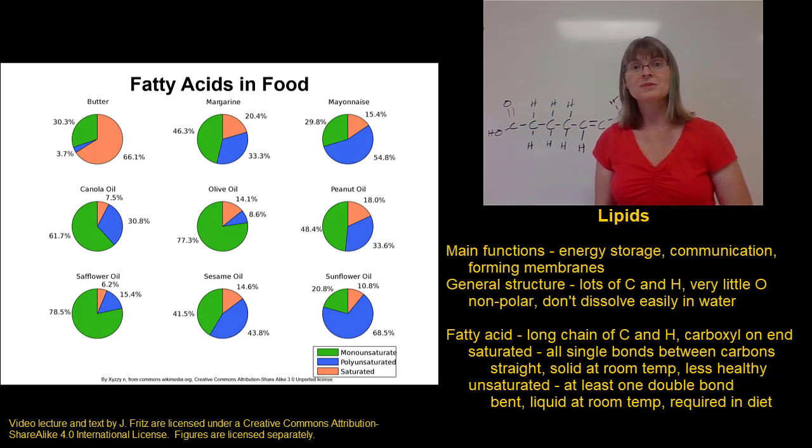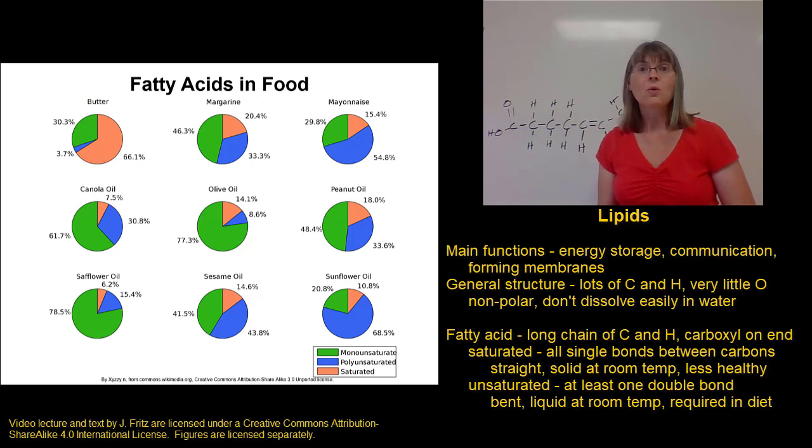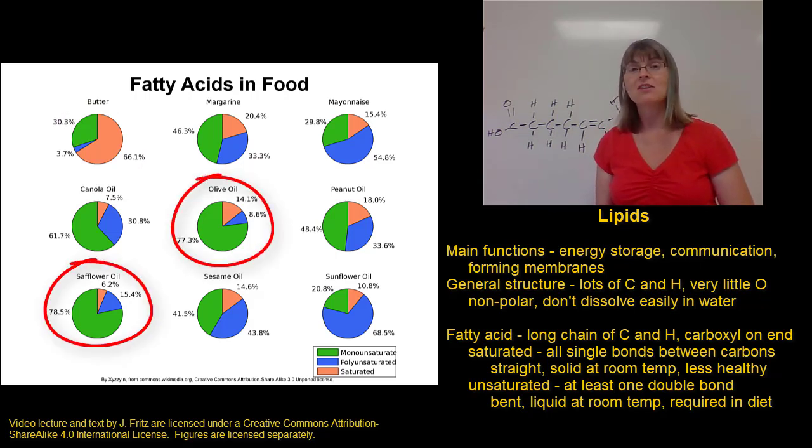This figure shows you the percentages of saturated and unsaturated fatty acids in different types of foods. The orange color is showing you the saturated fatty acids, and the green and blue are showing different types of unsaturated fatty acids. And you can see that something like butter has a lot of saturated fats, and not as much unsaturated, whereas oils like olive oil or safflower oil have a lot of unsaturated fatty acids, the healthier kind, and fewer of the saturated fatty acids.